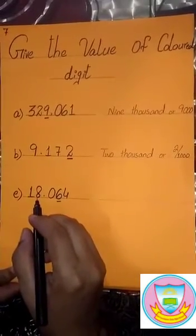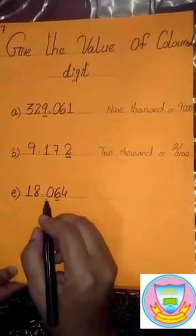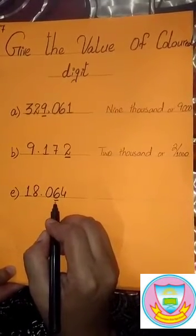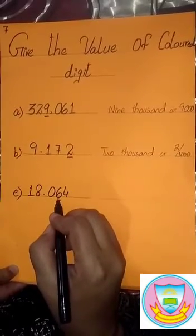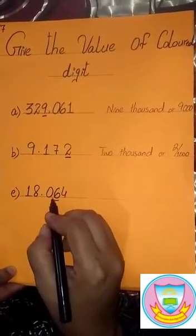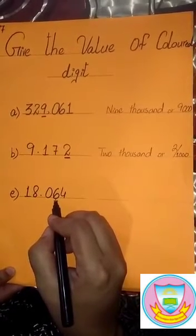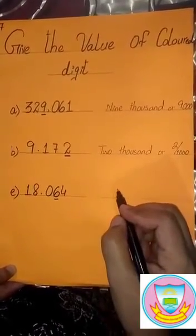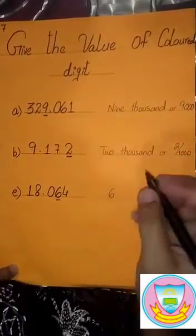Our third question is also in decimal form. The question is 18.064. In this question, we find the value of six. Six is the second digit after the decimal, and we know that after the decimal, the second digit value is always in hundredths. So we write it as 6/100.